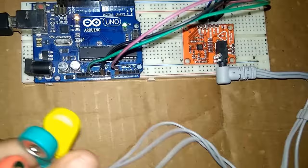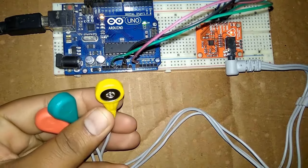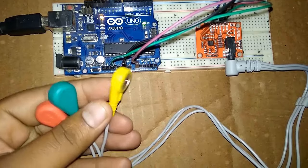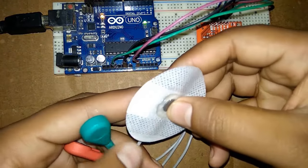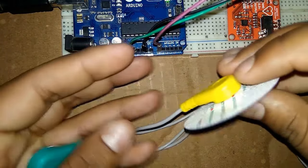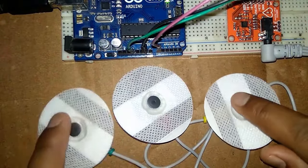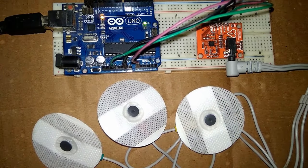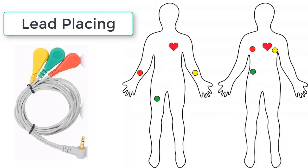We have three electrode cables: yellow, green, and red. These are the pads — just connect each pad to the corresponding cable. All pads are now successfully connected.